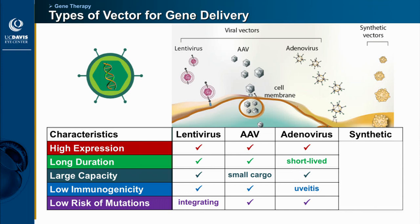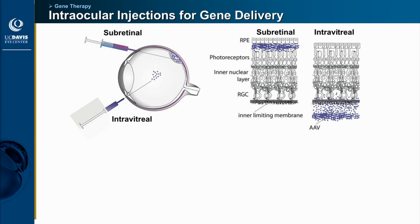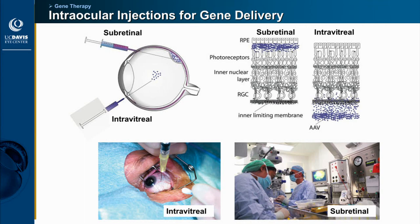After you have the vector, you need to deliver it to the eye. We talk about intravitreal versus subretinal injections. Subretinal injection has the advantage of placing the vector right against the photoreceptors and RPE, giving good transduction efficiency, but it only creates a small bleb so the effect is very localized. Intravitreal injection can theoretically spread throughout the eye, but it's blocked by the internal limiting membrane, making it hard to penetrate the retinal layers.